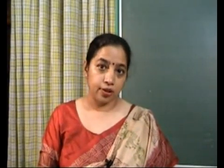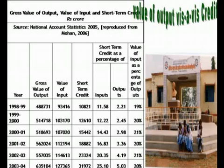This can be illustrated by the following table, as you can see on the slide. In the year 1998-99, the value of input as a percentage of output was 19% only, and it has not increased much — in the year 2003-2004, at the bottom of the table, you would notice it is now 20%. Not much improvement. Having seen this, let us have a look at the rural economic environment.